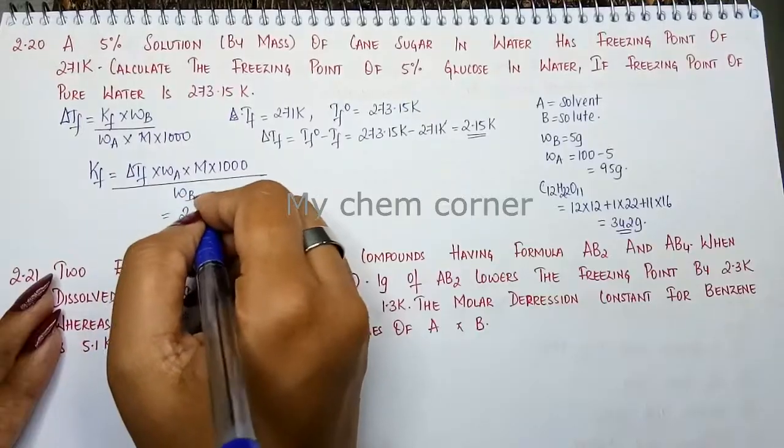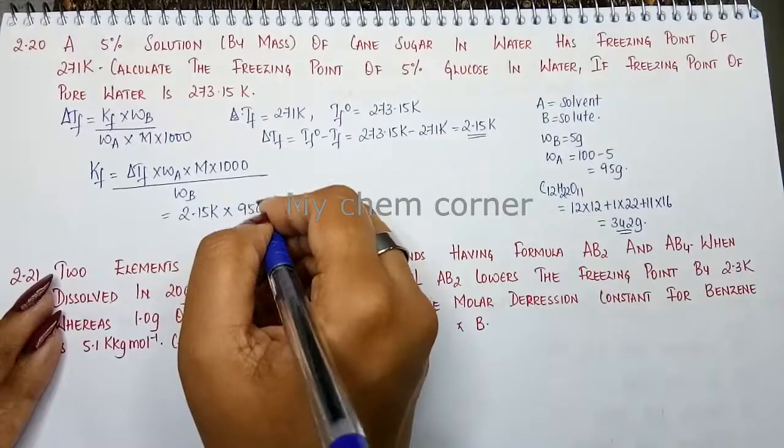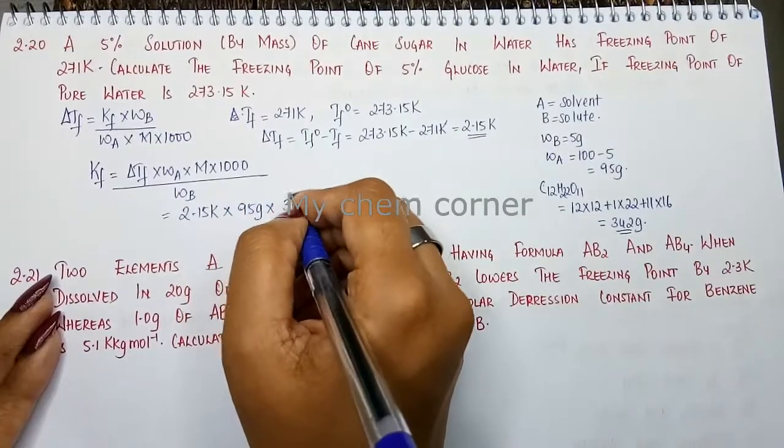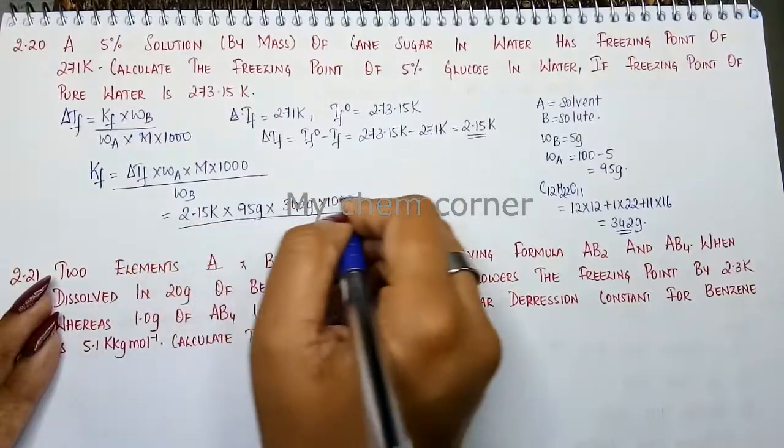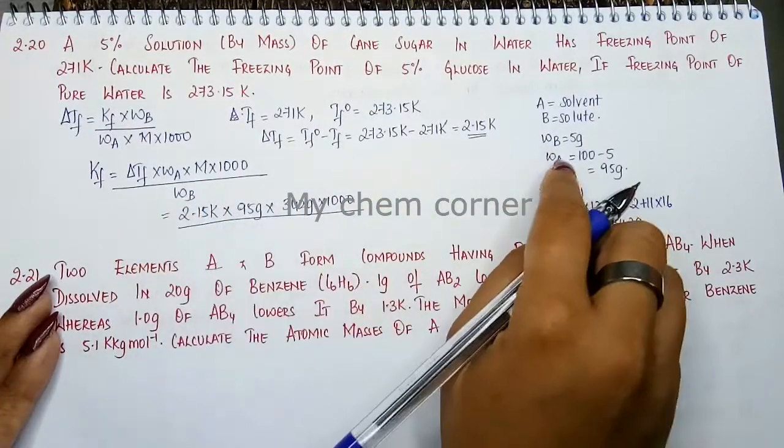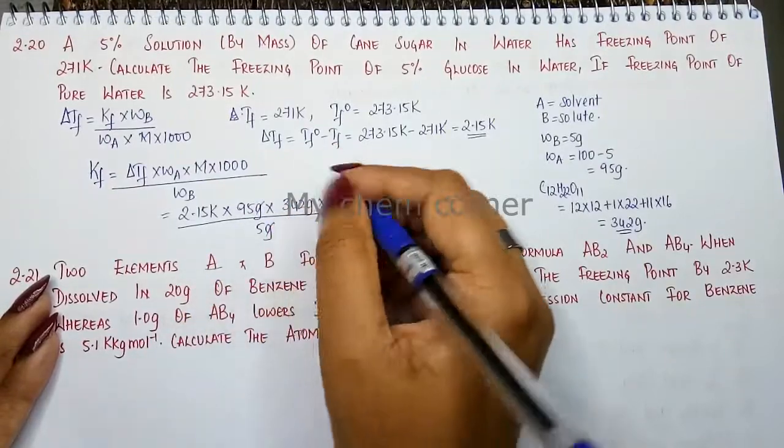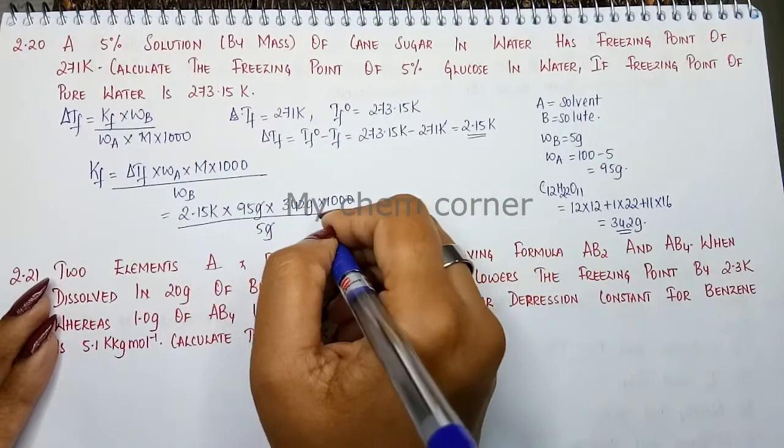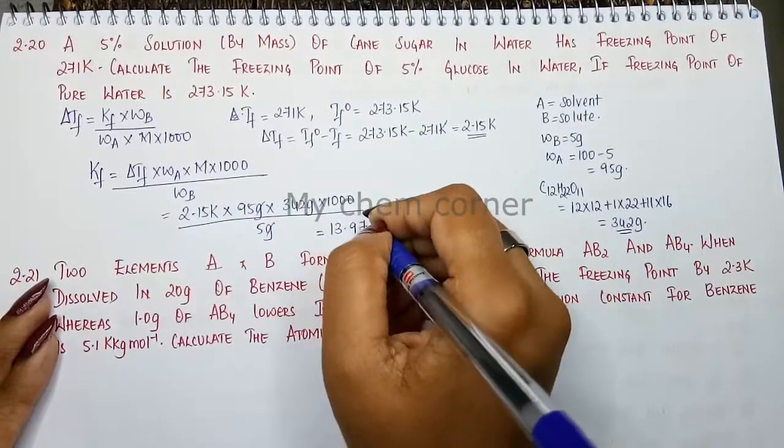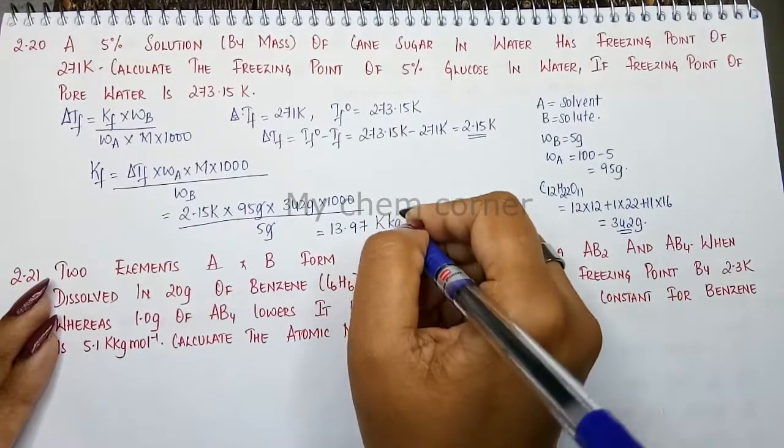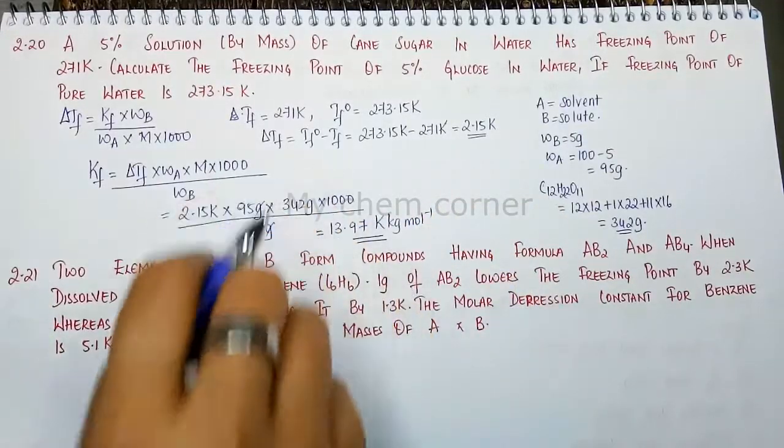Delta Tf is here 2.15 Kelvin into Wa is here 95 grams into molar mass which is 342 grams into 1000 divided by Wb is going to be 5 grams. Gram and gram will get cancelled. This is going to be 13.97 Kelvin kilogram per mole. That's going to be the answer for this.